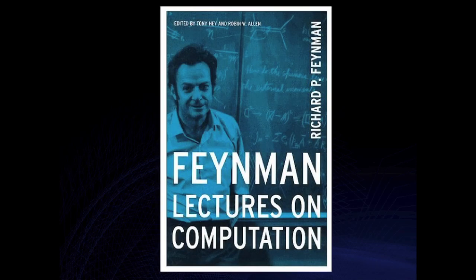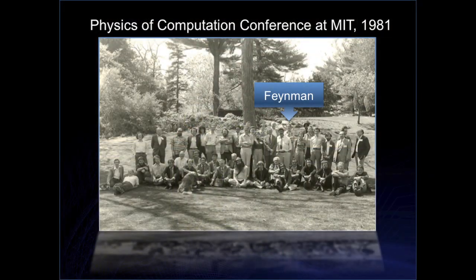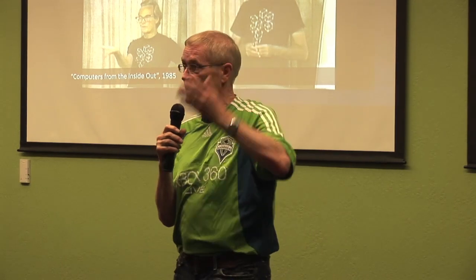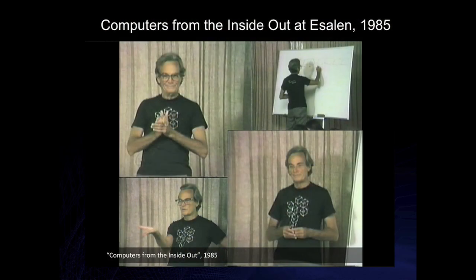In his last years, Feynman lectured about computing. This is the Feynman Lectures on Computing, which I had the privilege to edit. It started with an invitation from Ed Fedkin to give a talk at the Physics of Computation conference in 1981, where Feynman talked about the problems of simulating nature. Nature is intrinsically quantum mechanical, and if you try to do a quantum mechanical simulation, the Hilbert space grows enormously and it becomes impractical. So he invented a quantum computer, which I'll come to later.